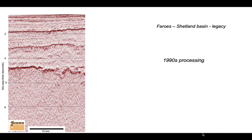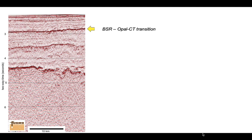Starting in the Faroe-Shetland Basin offshore northwest Europe, we're looking at legacy seismic data acquired by Fugro in the early 1990s, with their best processing efforts from the later 1990s. At the top is the seabed, and at around three seconds two-way time is a prominent reflector — a bottom-simulating reflector of diagenetic origin, the opal CT transition, where amorphous silica from diatoms is undergoing diagenesis to become quartz in the form of chert. It essentially tracks the seabed because it is very temperature-sensitive and temperature increases with burial depth.